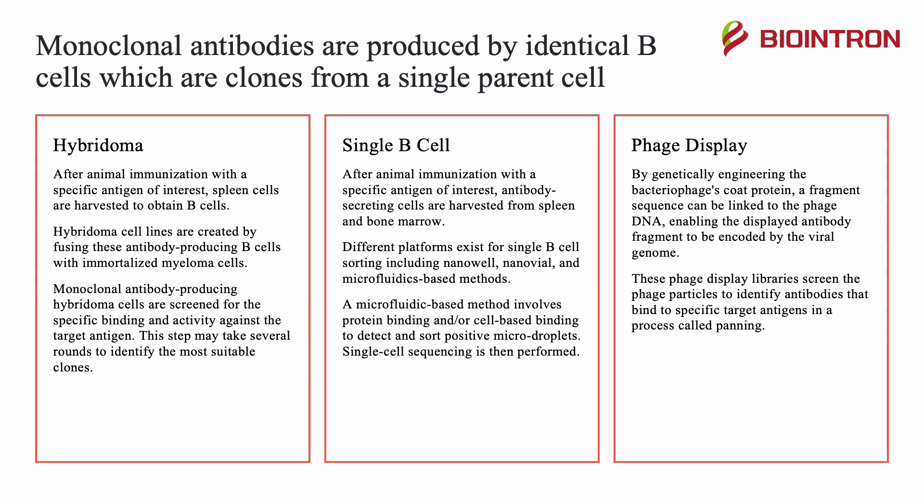Next, we have phage display. By genetically engineering the bacteriophage's coat protein, a fragment sequence can be linked to the phage DNA, enabling the displayed antibody fragment to be encoded by the viral genome. These phage display libraries screen the phage particles to identify antibodies that bind to specific target antigens in a process called panning.